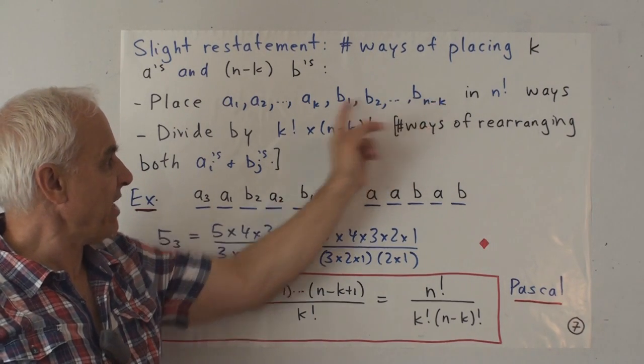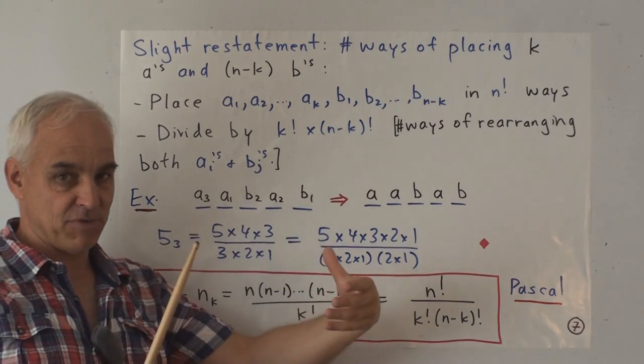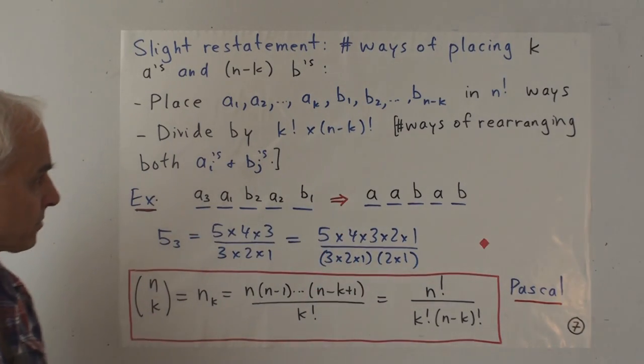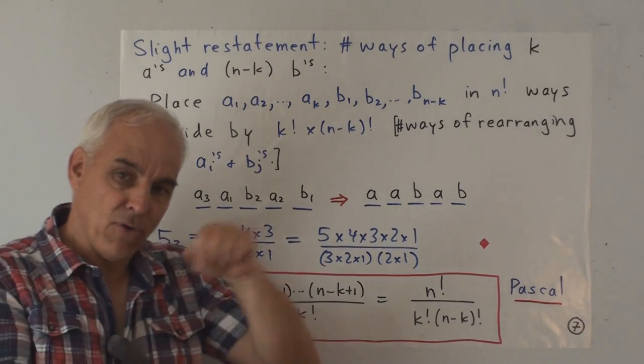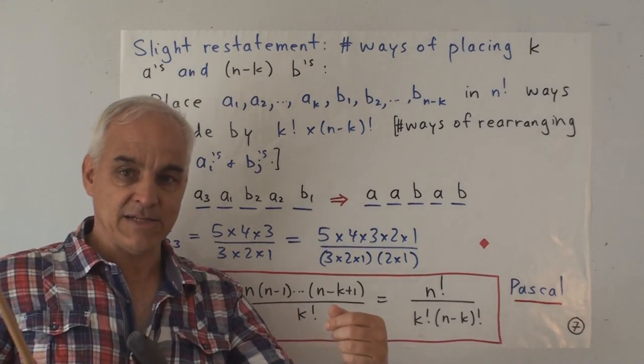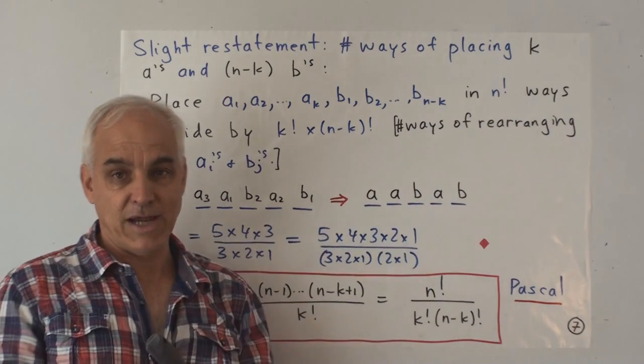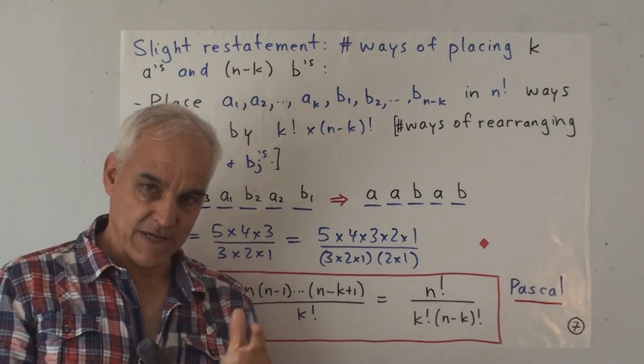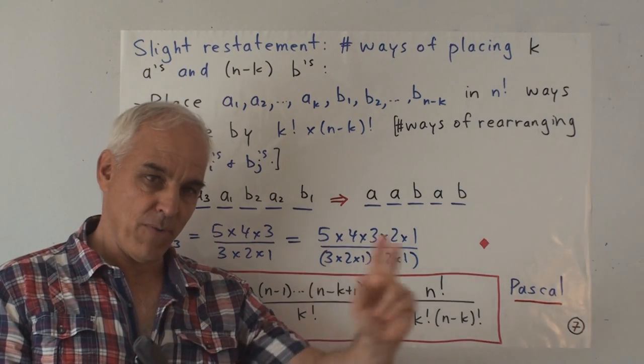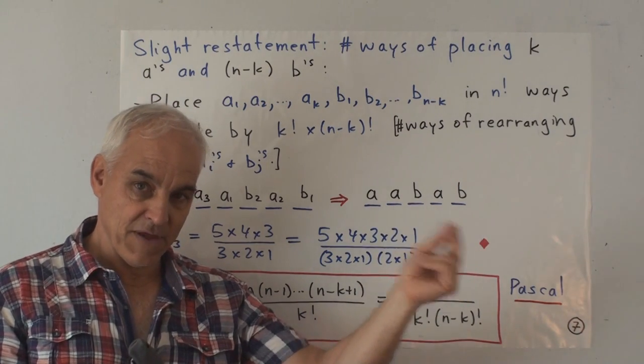We can think about that by labeling both the a's so a1 through ak as we had before and also labeling the remaining b's b1, b2 up to b, well, l or n minus k, say. The number of b's and the number of k's has to add up to n altogether. So now we have n things. And if we're going to put those n things in these n places, there are n factorial ways of doing that.